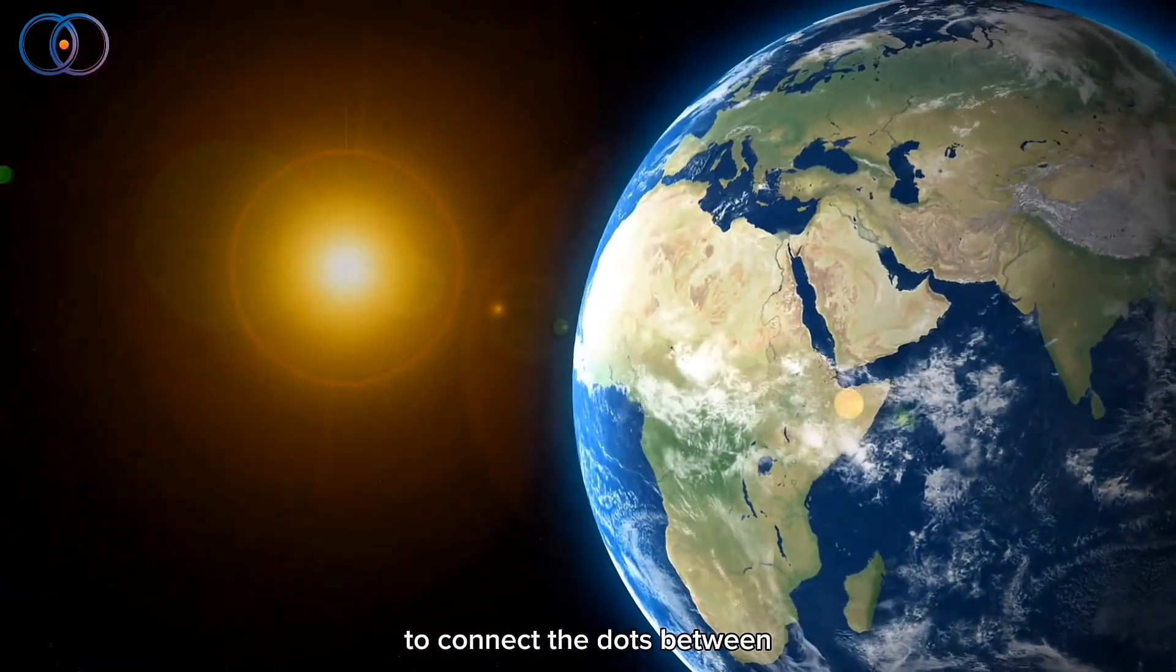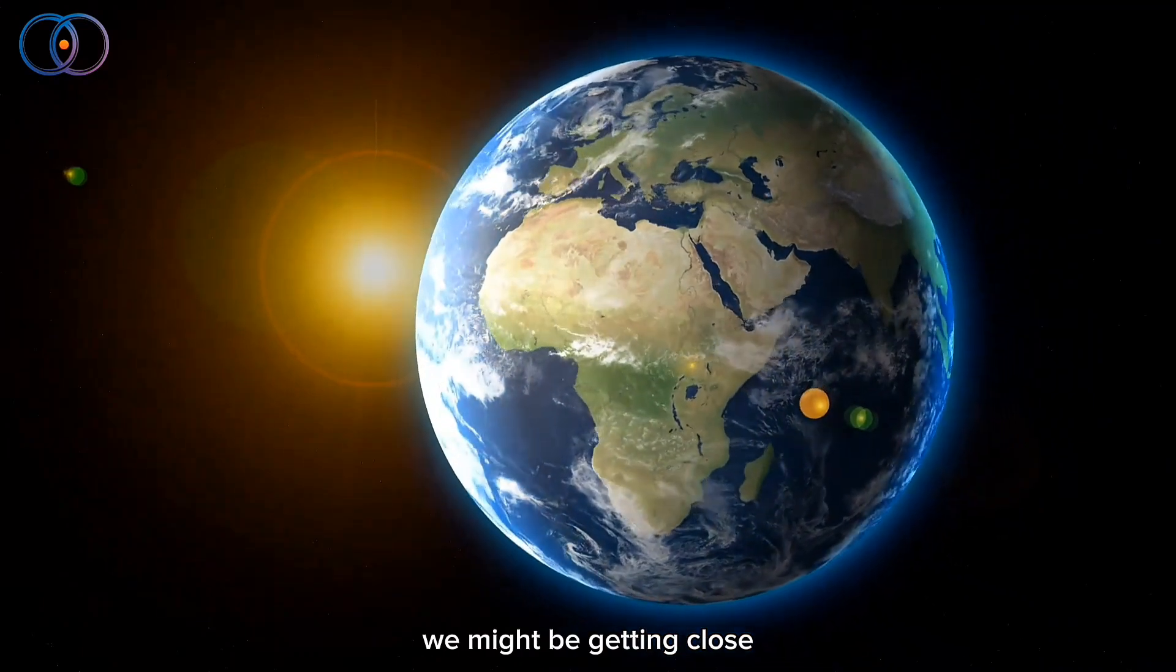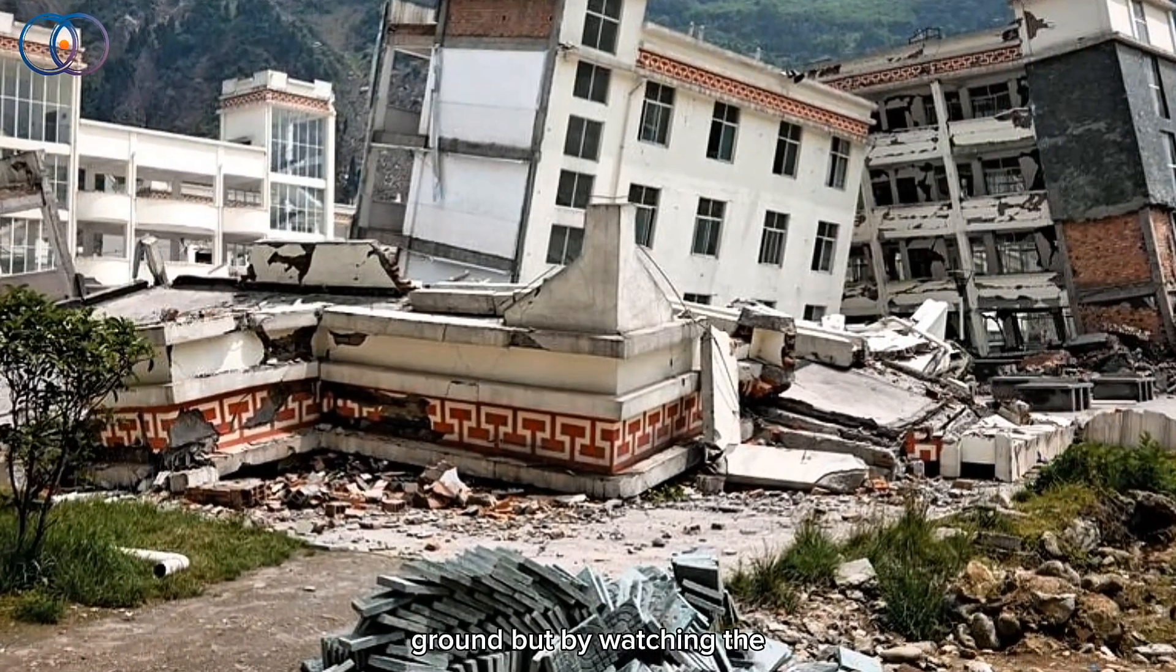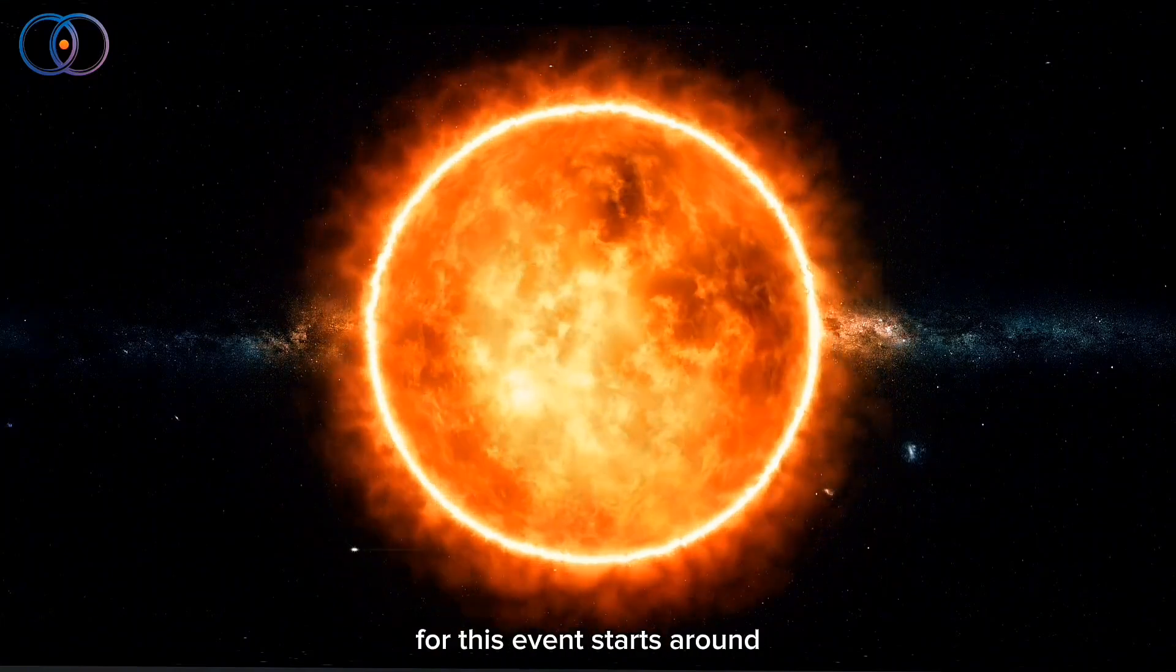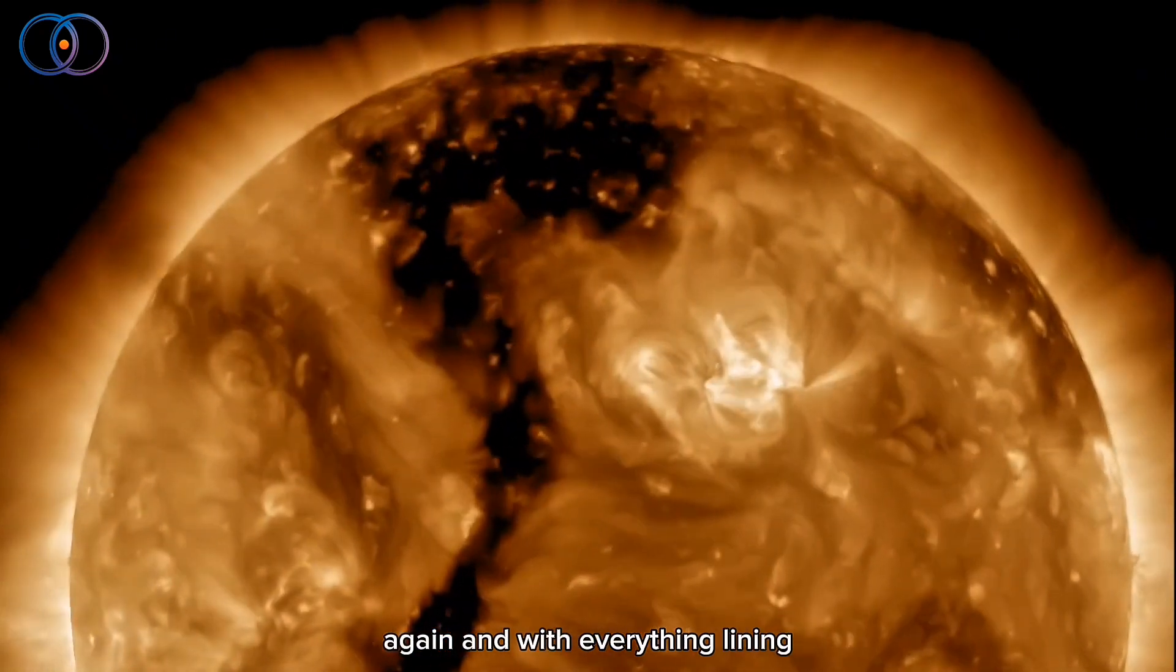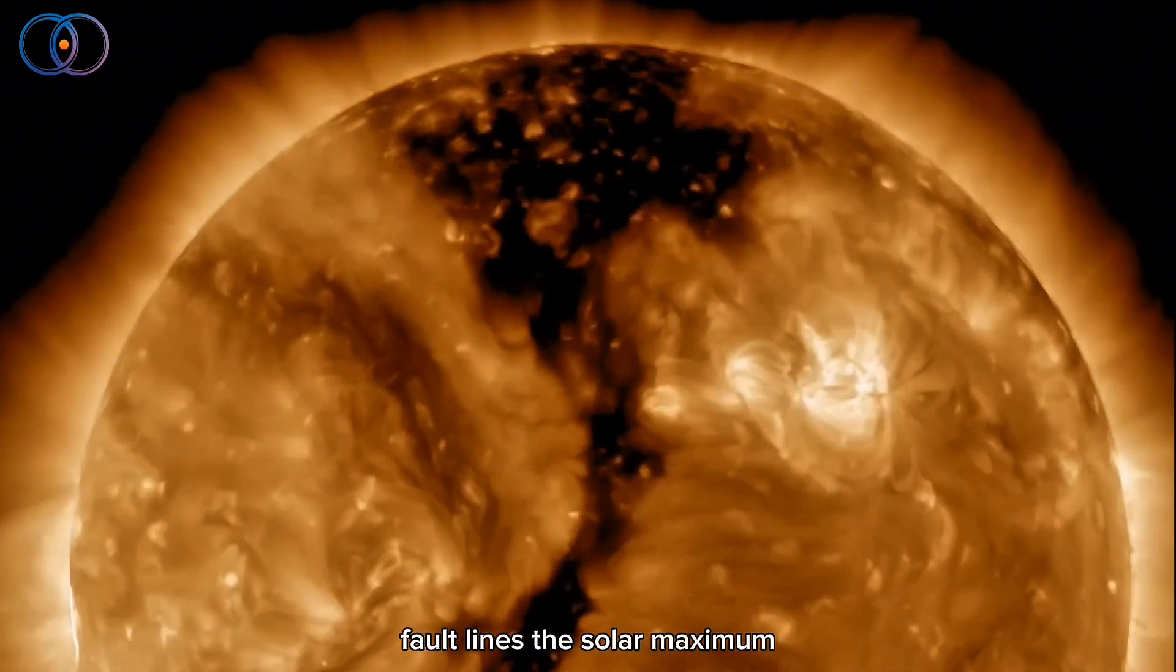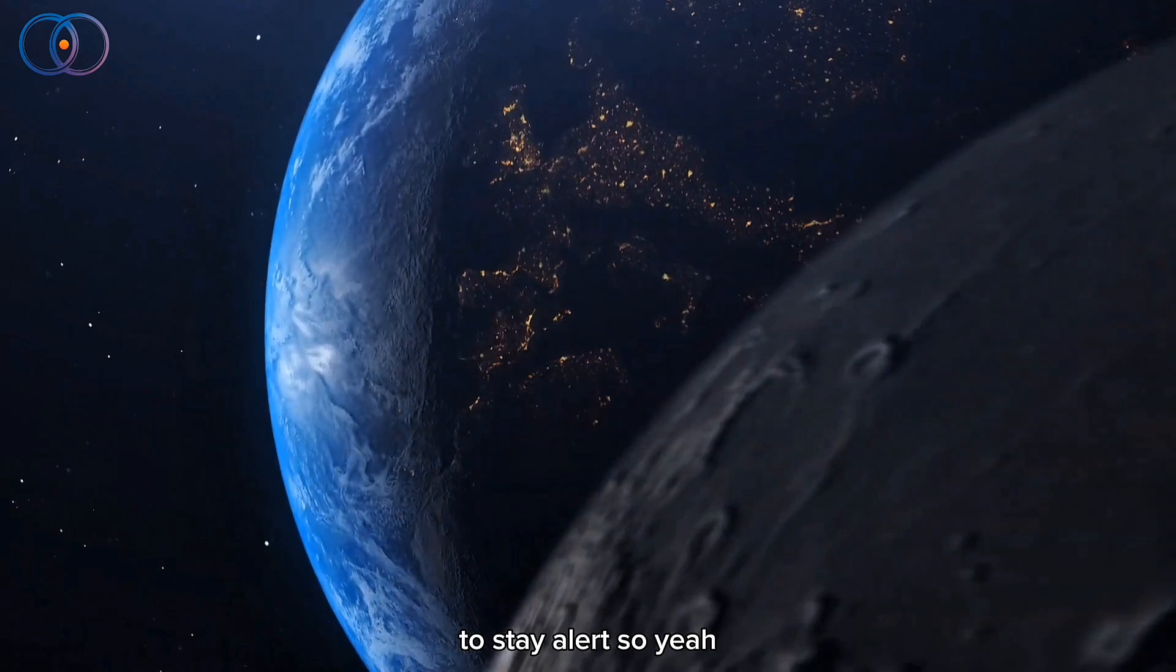Scientists are starting to connect the dots between what happens in space and what happens deep underground, and we might be getting close to being able to predict big earthquakes, not by watching the ground, but by watching the sun. The big risk window for this event starts around April 2025. That's when the coronal hole will be facing Earth again. And with everything lining up, the overdue pressure on fault lines, the solar maximum, recent geomagnetic storms, and low plasma density, it's a time to stay alert.